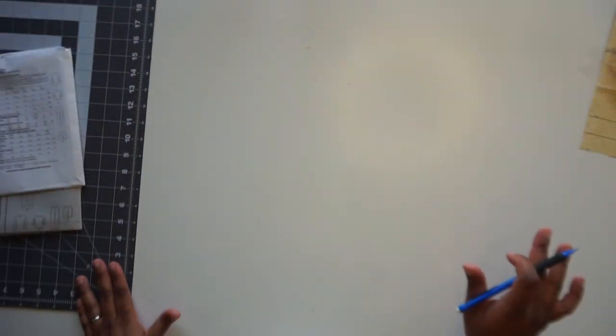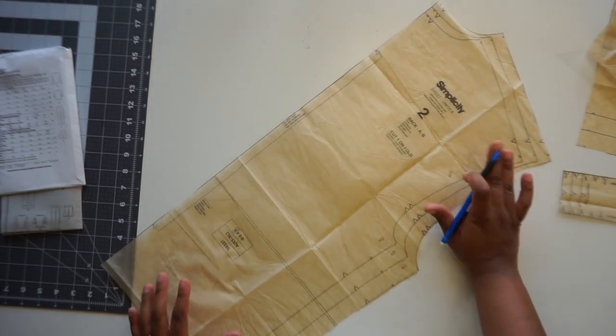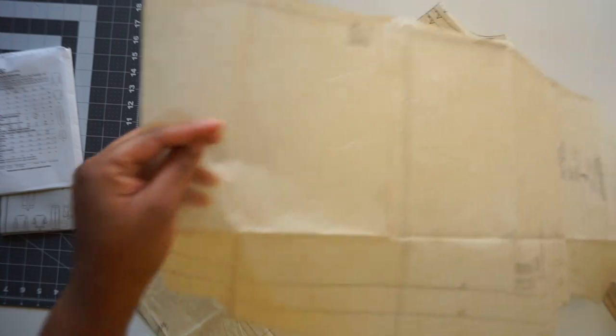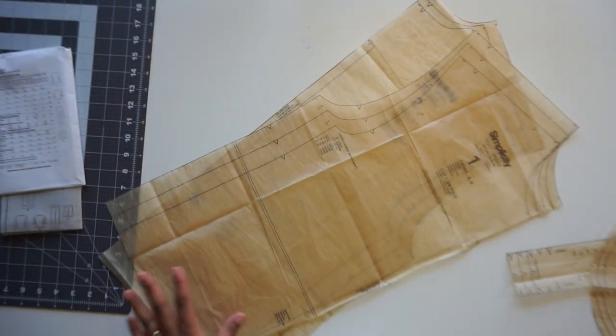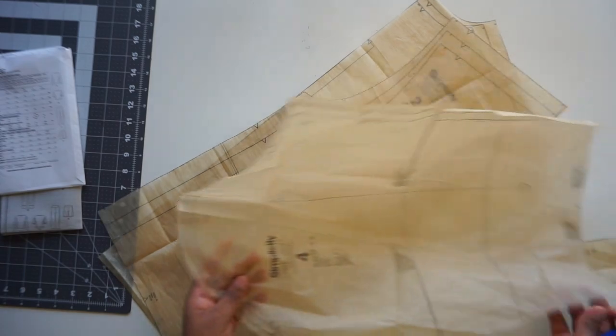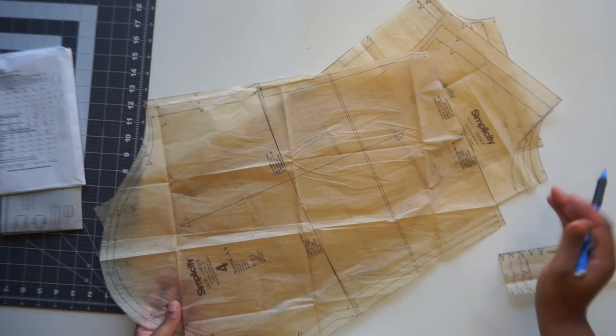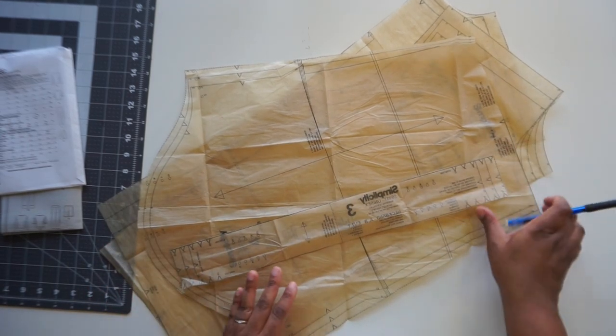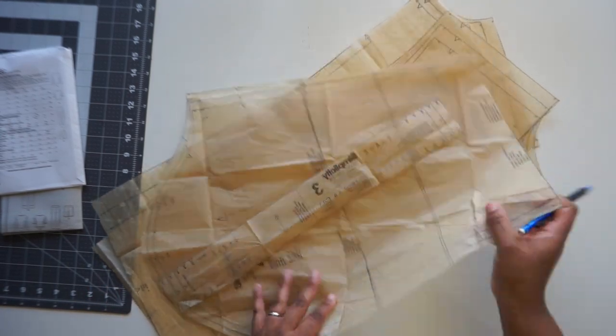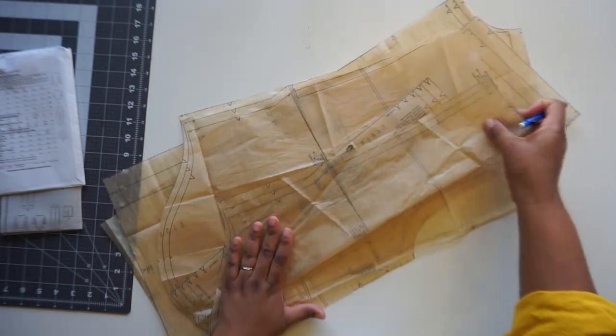Alright, now we're going to look at the pattern pieces that we are going to be using. So you're going to need your back, your front, your full length sleeve, and your neckband piece.